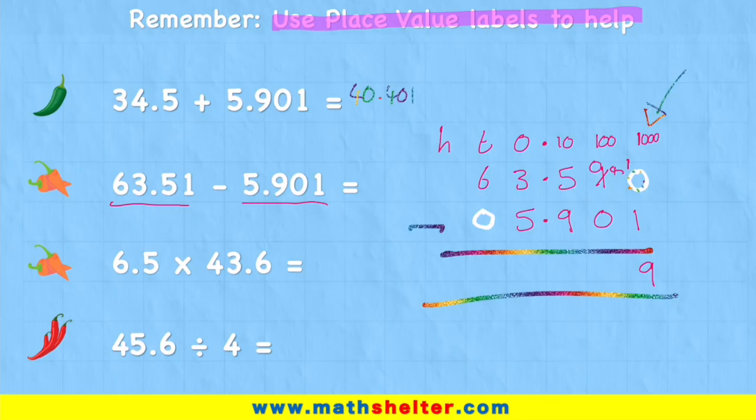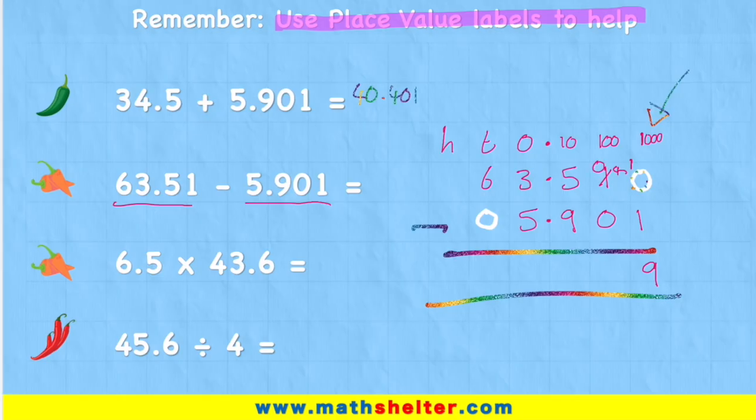Now I have a zero in this hundredths column. So zero subtract zero is zero. Five subtract nine I can't do, so I have to borrow from the next available digit, which is the three. 15 subtract nine is six. Put back my decimal. Two subtract five I can't do, borrow from next door. 12 subtract five is seven. Five subtract zero is five.